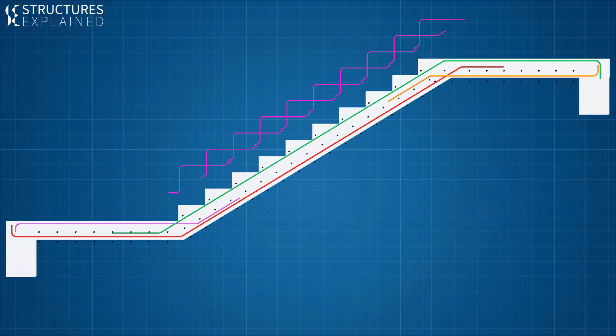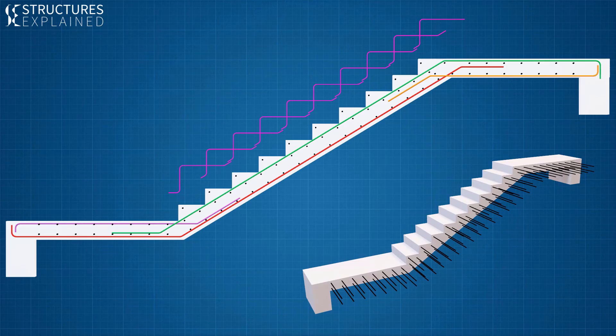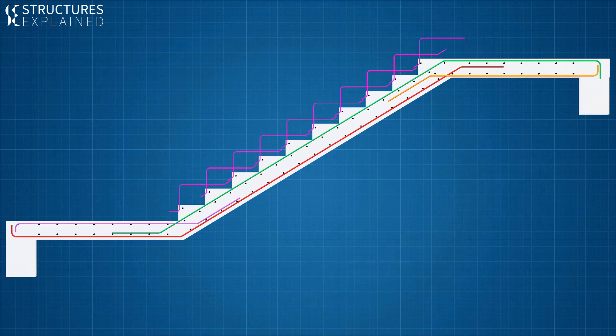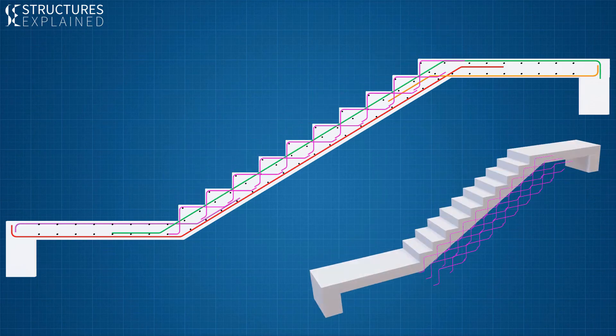To tie together the main reinforcement, transverse reinforcement is provided in landings, waist slab and steps as per design. The steps can be provided with bent step bars having a single bar to prevent creep and shrinkage cracks.